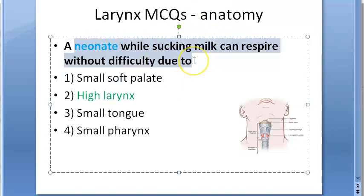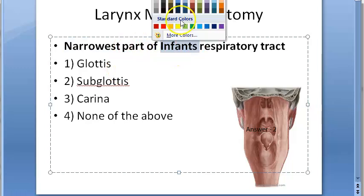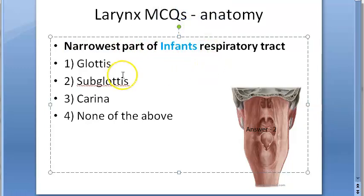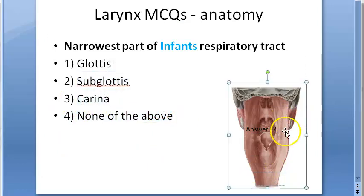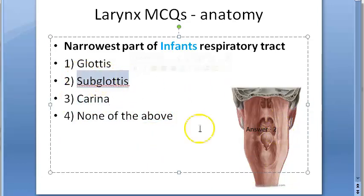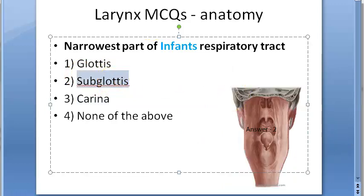The narrowest part of an infant's respiratory tract — is it the glottis, subglottis, none of the above, or carina? The answer is subglottis. In infants the narrowest part is the subglottis; in adults it is the glottis.